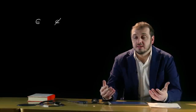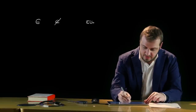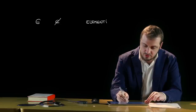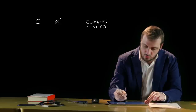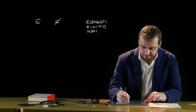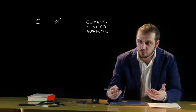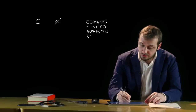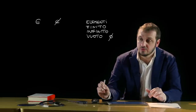Tutti gli oggetti che fanno parte di un insieme vengono definiti elementi. Se questi elementi costituiscono un numero finito, parleremo di insieme finito; qualora invece l'insieme contenga un numero infinito di elementi, parleremo di insieme infinito. È possibile anche definire l'insieme vuoto, che è un insieme che non contiene alcun elemento, e si indica in questo modo.